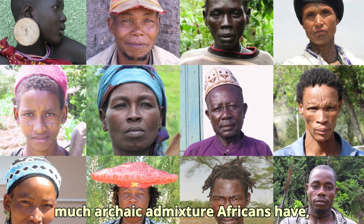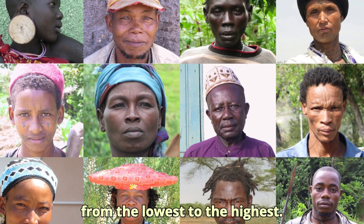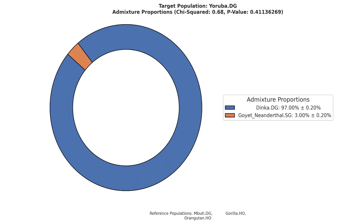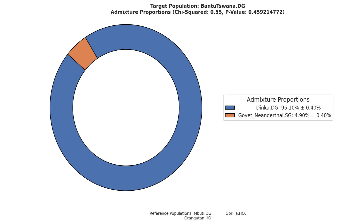Now let's see how much archaic admixture Africans have, from the lowest to the highest. The Yoruba of Nigeria have the lowest, at 3%; the Pval is 0.4, which is very satisfactory. The Ibo of Nigeria have the second lowest, at 3.6%; the Pval is 0.8, which is very satisfactory. A Pval above 0.01 is usually considered passing or plausible. The Bantus of Tswana have the third lowest archaic contribution, at 4.9%; the Pval is 0.5, which is very satisfactory.